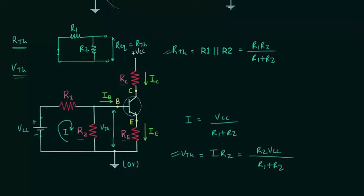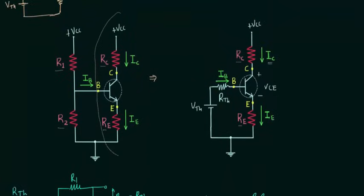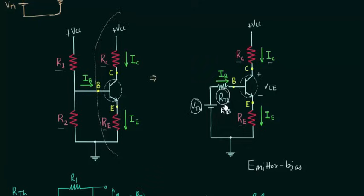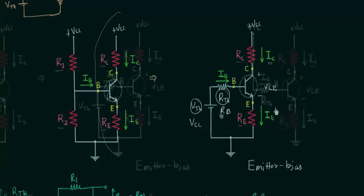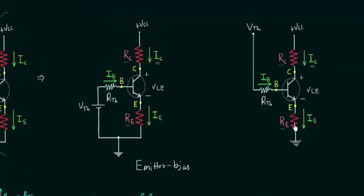Now we can find collector current IC and voltage VCE. When you look at this equivalent circuit closely, you will find it is nothing special but the emitter bias configuration. The only difference is resistance RTH in place of RB, and voltage VTH in place of Vcc. We can also redraw this circuit taking VTH as a potential at a point, and you can clearly see this circuit is emitter bias configuration with RTH in place of RB and VTH in place of Vcc.